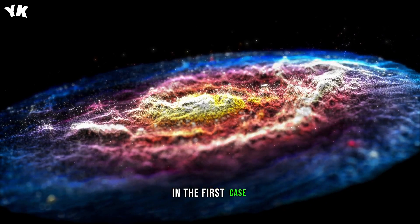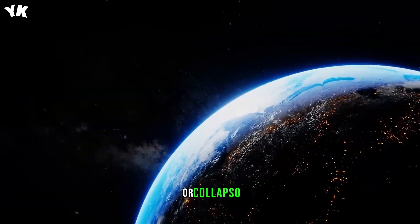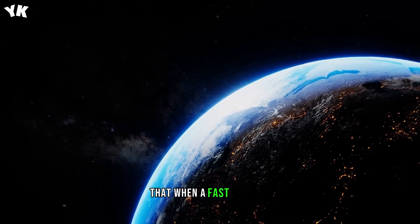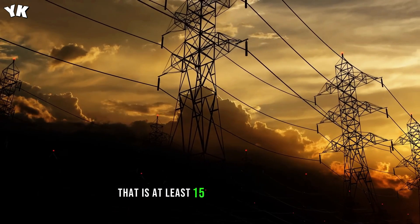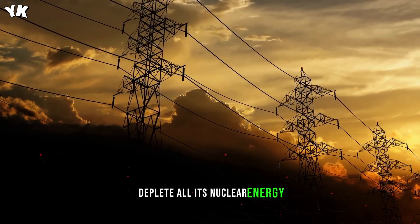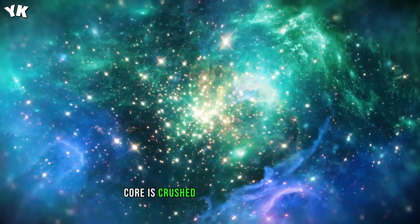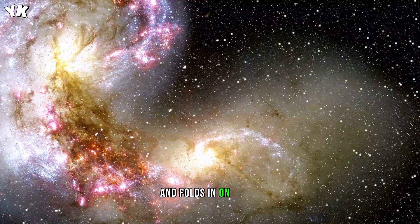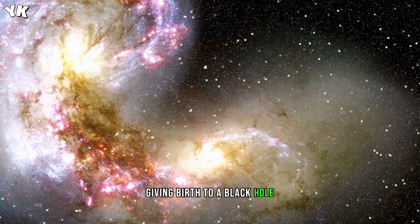In the first case, the collapsed star or collapsar model states that when a fast-spinning massive star that is at least 15 times the sun's mass depletes all its nuclear energy, its supercompressed core is crushed by the star's gravity and folds in on itself, giving birth to a black hole.